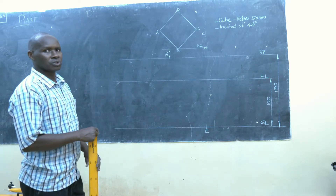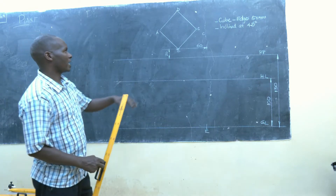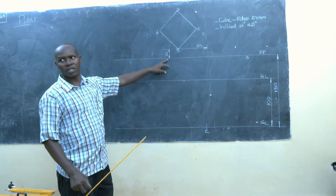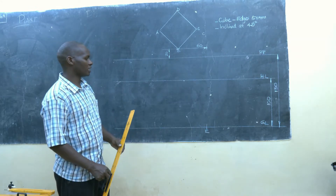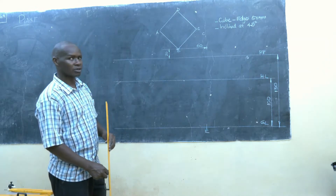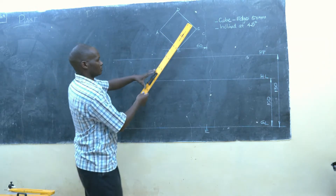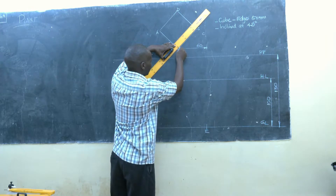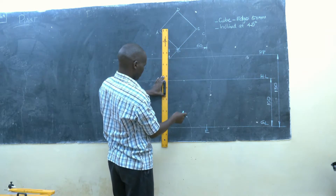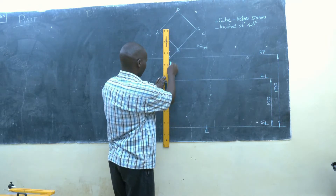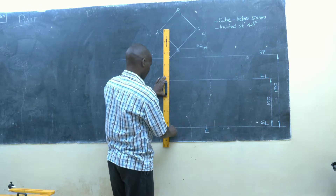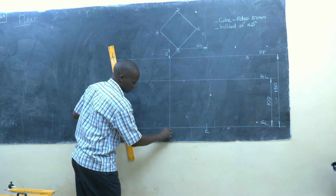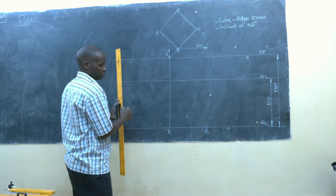So the first thing we need to do is to produce a line to touch the picture plane, then produce it vertically down up to the ground level. That will give us point X.